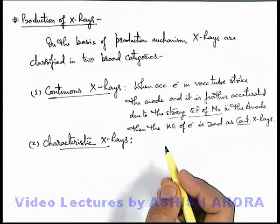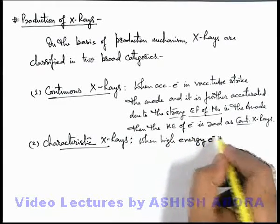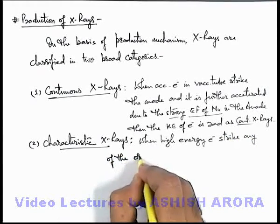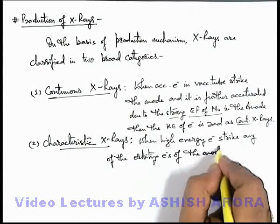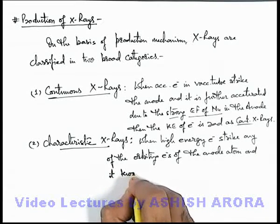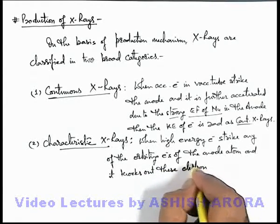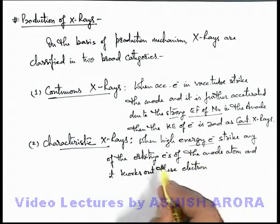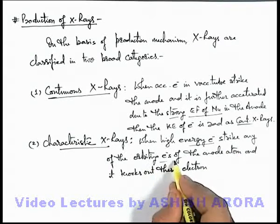If we talk about characteristic X-rays, we can say when high-energy electrons strike any of the orbiting electrons of the anode atom and it knocks out these electrons. We know that this knocking-out process is possible only when the high-energy electron possesses an amount of energy which is more than the binding energy of these electrons. So if it is more than that, during collision it is possible that these orbiting electrons can be knocked out.